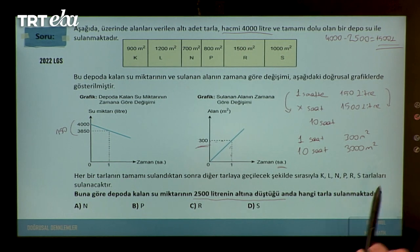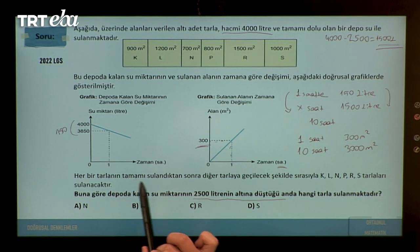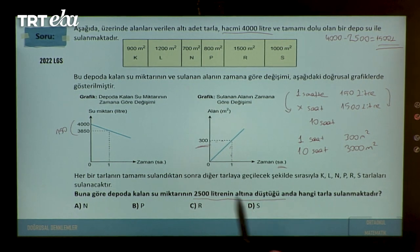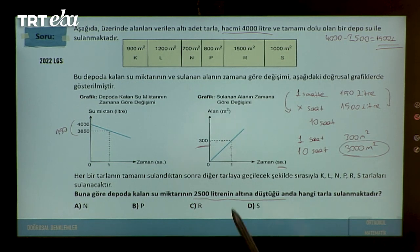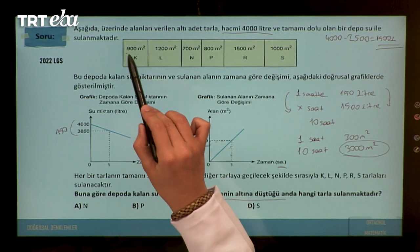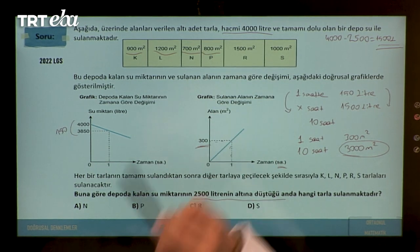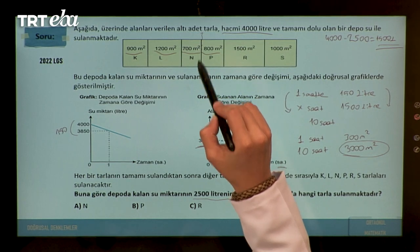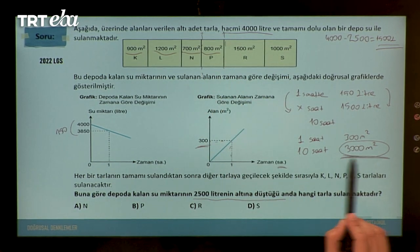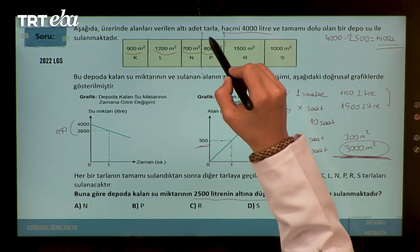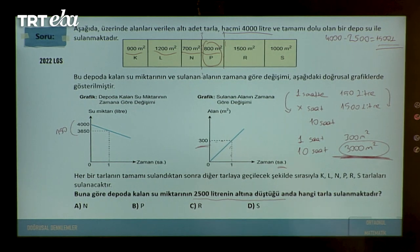Bu 3000 metre kareyi nerede yakalıyoruz? K: 900, L: 1200 daha → 2100, N: 700 daha → 2800, P: 800 daha → 3600. 2800'deyken P'ye geçiyoruz ve 3000'i P tarlasında yakalıyoruz. Dolayısıyla doğru cevabımız P tarlası, B seçeneği.